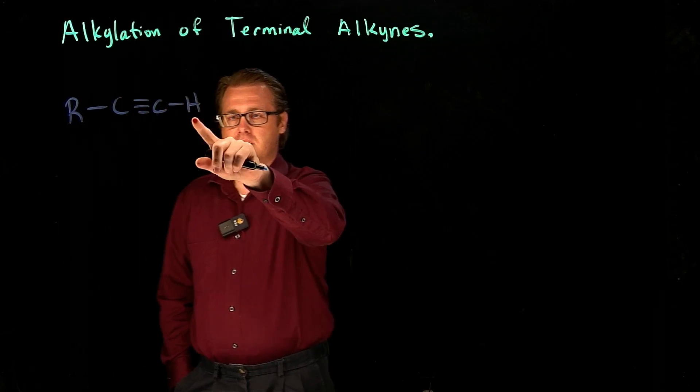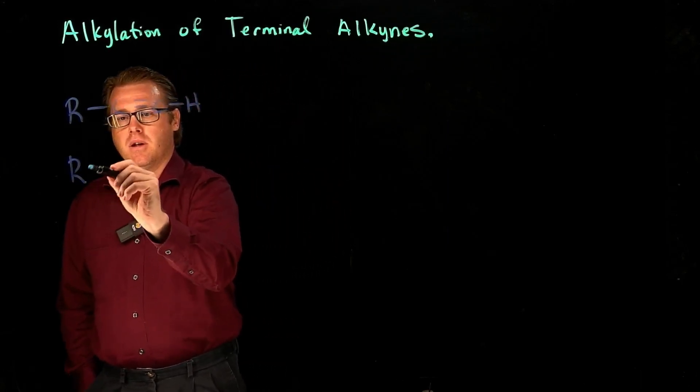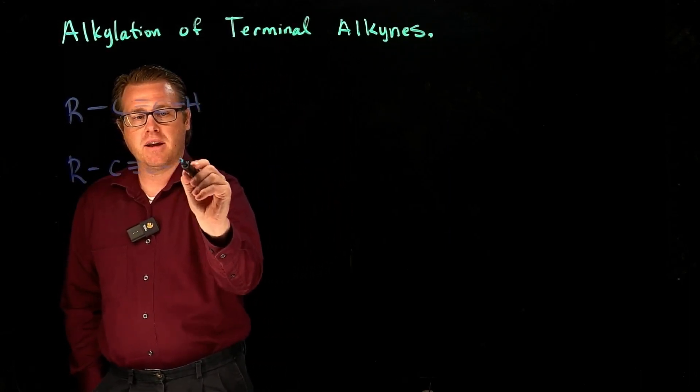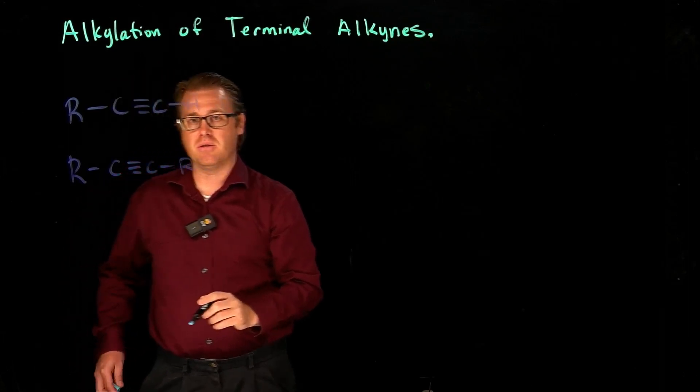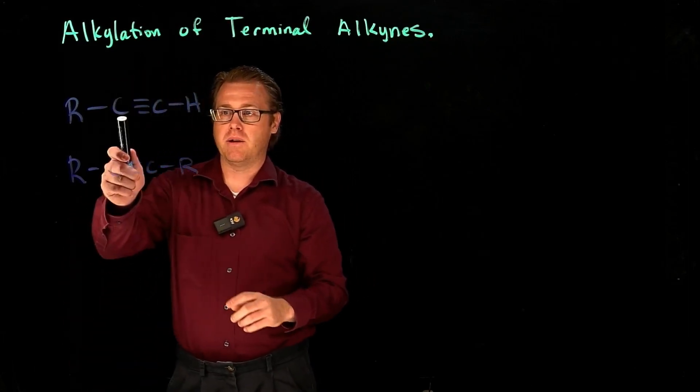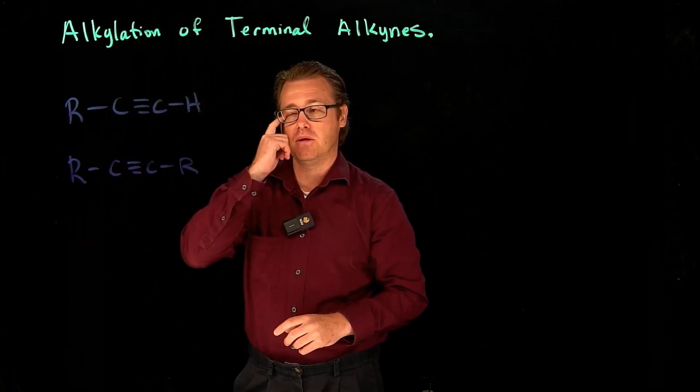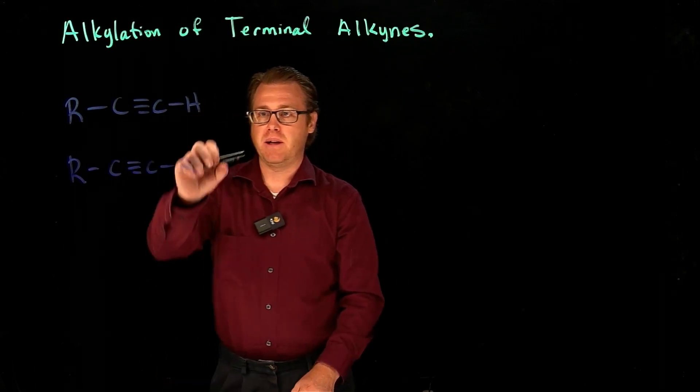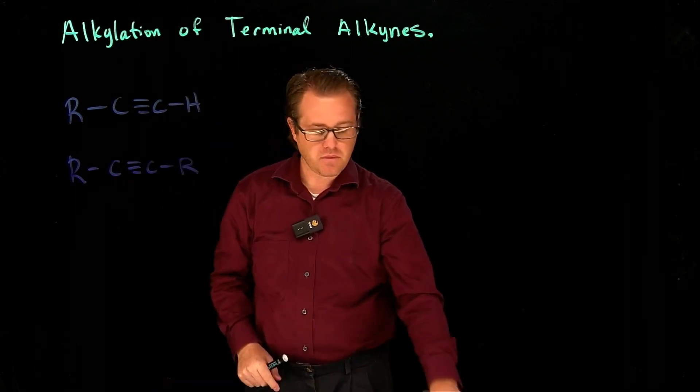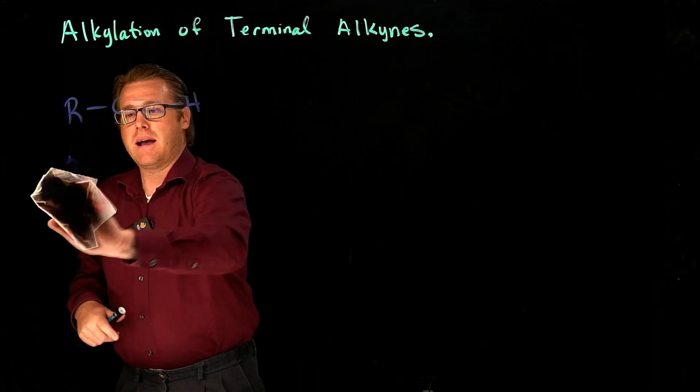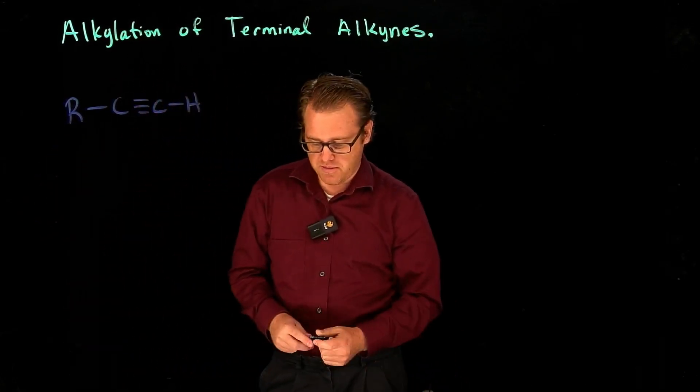So we see that this is terminal, and then this alkyne right here would be internal. So we have to be working with terminal alkynes because we need this proton. And that will make sense once we go through the mechanism here.